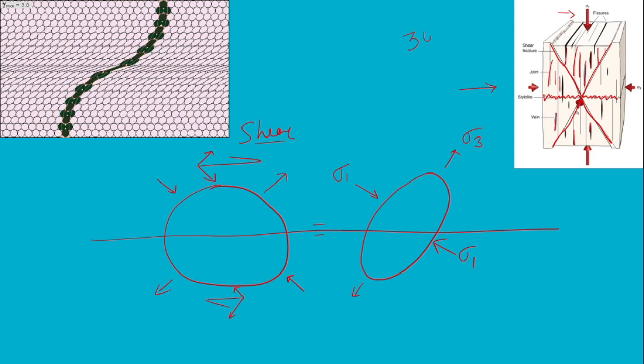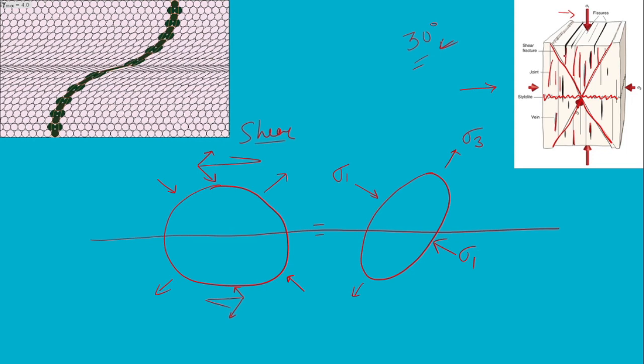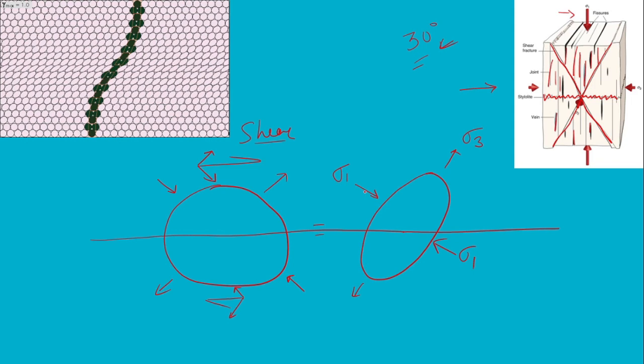These conjugate Riedel shears are actually developing at about 30 degrees to sigma one, which must be or should be developed at 45 degrees theoretically, but considering the cohesion and friction of the rock, they develop at roughly about 30 degrees to sigma one on both sides, and hence they are called conjugate Riedel shears.